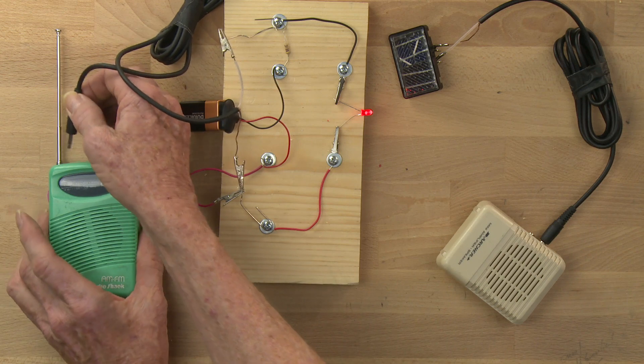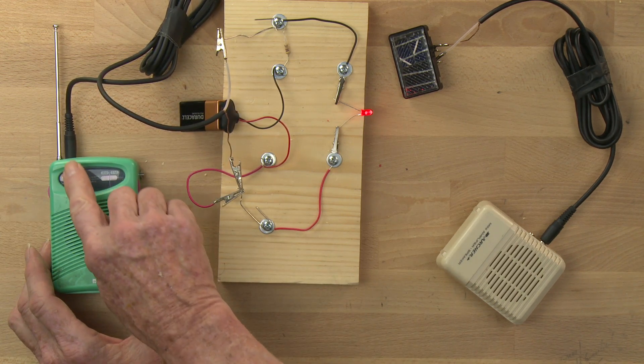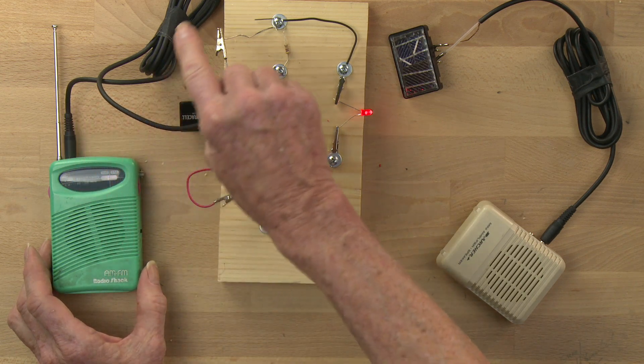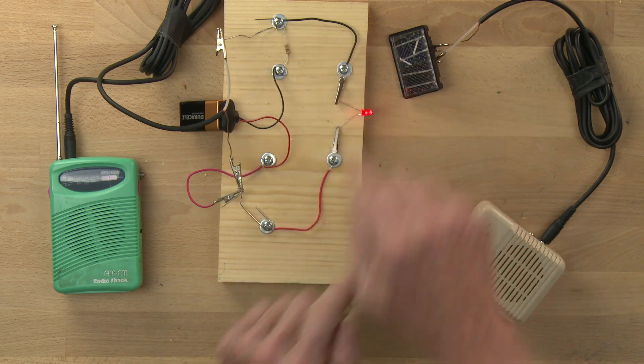When I plug in the phono jack, it disconnects the internal speaker and sends the AC audio signal to my two alligator clips. The two alligator clips are hooked to the LED.